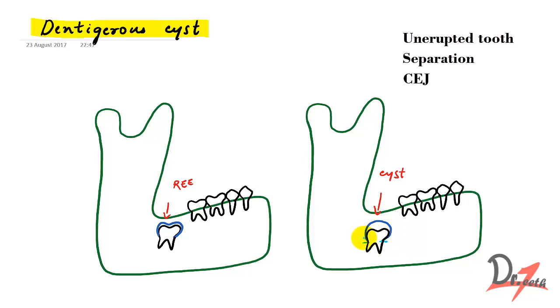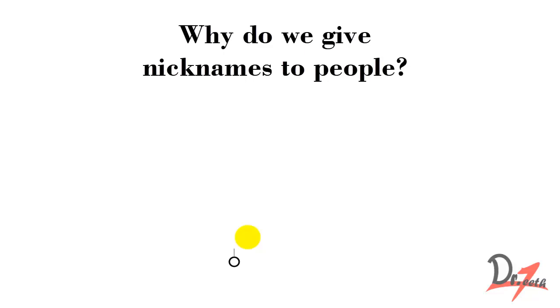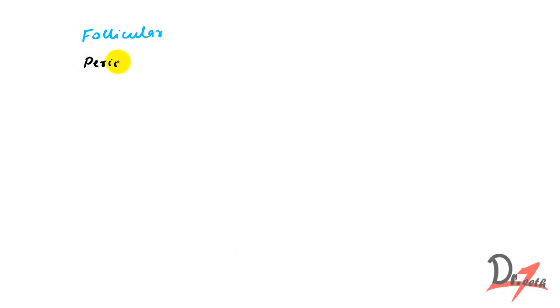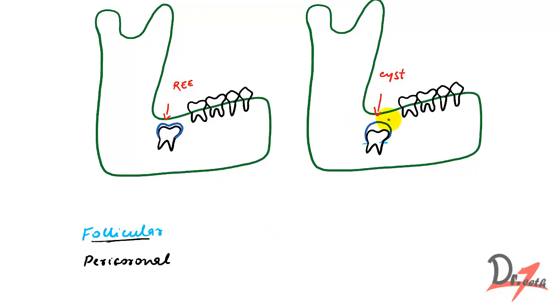Let's move on. Why do we give nicknames to people? Our dentigerous cyst has been given two nicknames. One is the follicular cyst, and the other is the pericoronal cyst. It's called follicular because of the separation of the follicle, and pericoronal because it surrounds the crown at the CEJ.